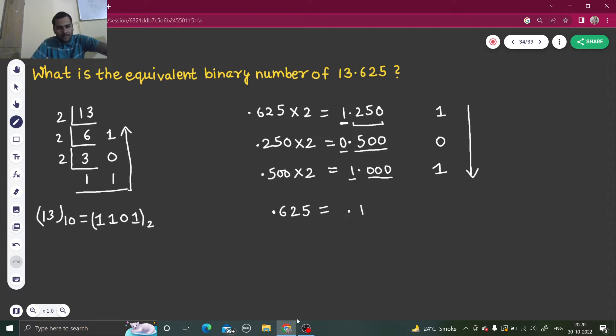If you want to find the binary equivalent of 13.625, the equivalent of 13 is 1101 and the equivalent of 0.625 is 101. So this is a decimal expression, this is a binary expression.